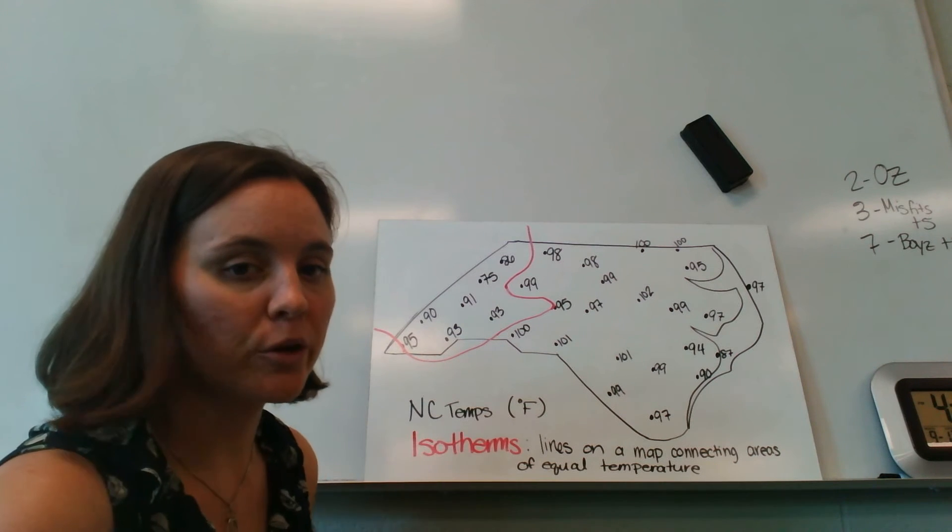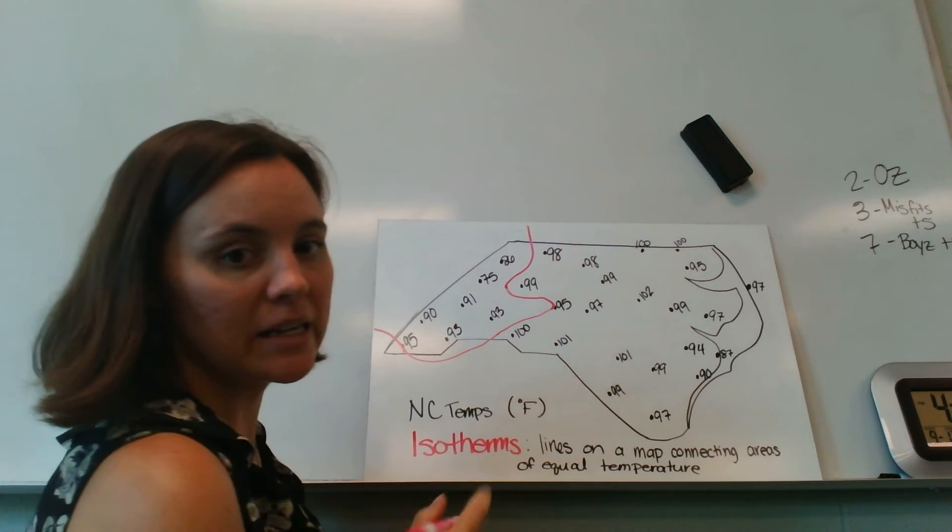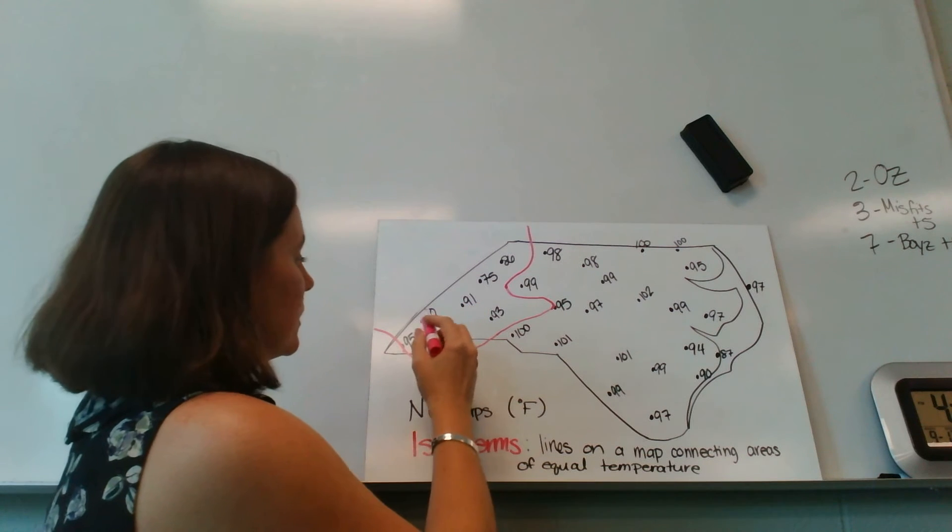So my next isotherm, since I'm going every five degrees, is going to be 90 degrees. So I start at 90.